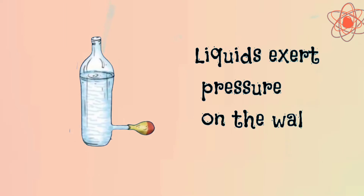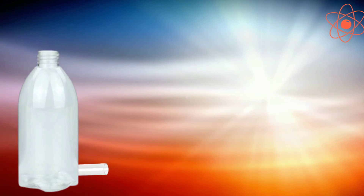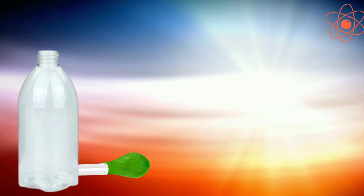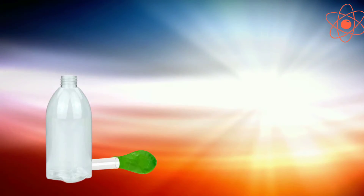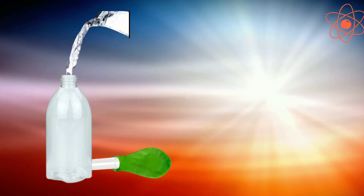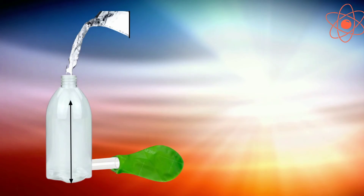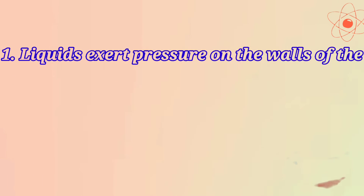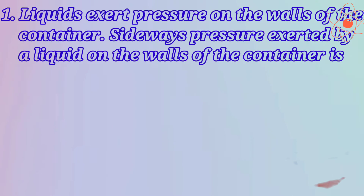Second characteristic: liquids exert pressure on the walls of the container. Let us understand this with the help of an activity. Take a bottle with a tap-like opening at its side. Tie a balloon to the opening and fill the bottle with water. You will notice that the balloon bulges outwards. Now pour more water into the bottle so that the height of the water column increases — the size of the bulge increases. This shows that liquids exert pressure on the walls of the container. This sideways pressure is called lateral pressure.